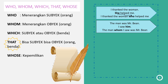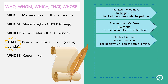Contoh ketiga: 'The book is mine. It is on the table.' Maka: 'The book which is on the table is mine.' The book adalah benda, bukan orang, jadi hanya bisa pakai 'which' atau 'that.' Di contoh ini pakai 'which' karena dia bisa untuk subject maupun object. Or, if you want to use 'that,' you can use 'that' in all of these examples. 'The book that is on the table is mine' — itu juga correct.